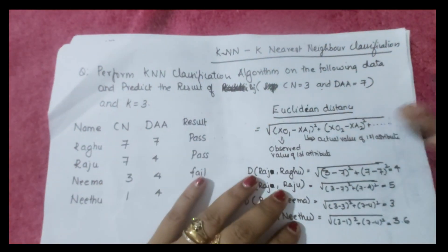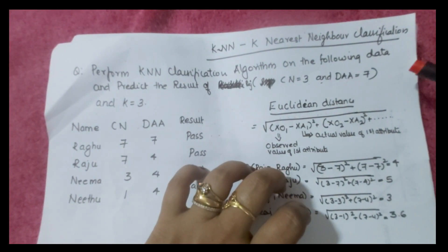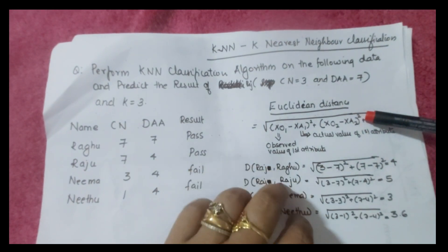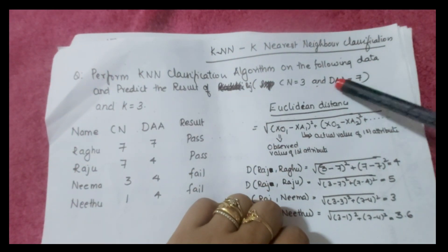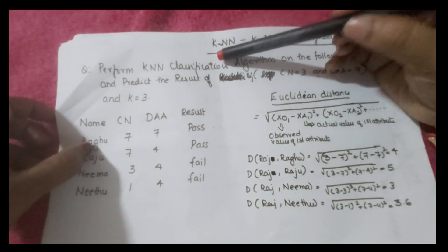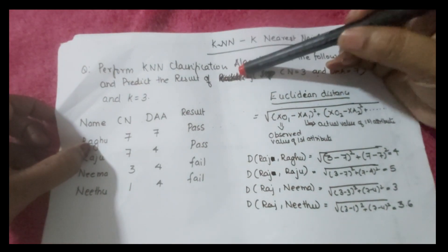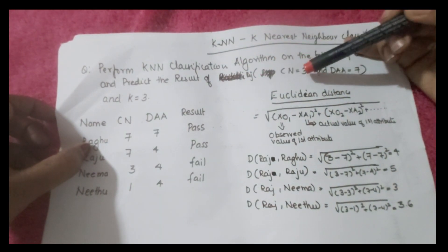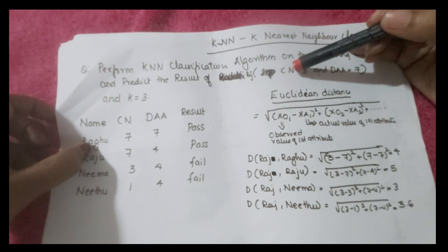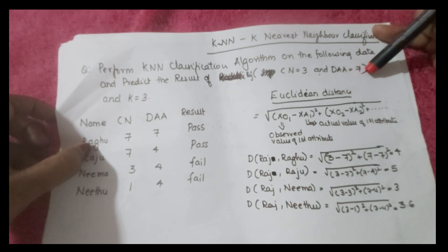Let us do a problem based on k-nearest neighbor using Euclidean distance. Perform the KNN classification algorithm on the following data and predict the result for Raj, given CN = 3 and DA = 7.